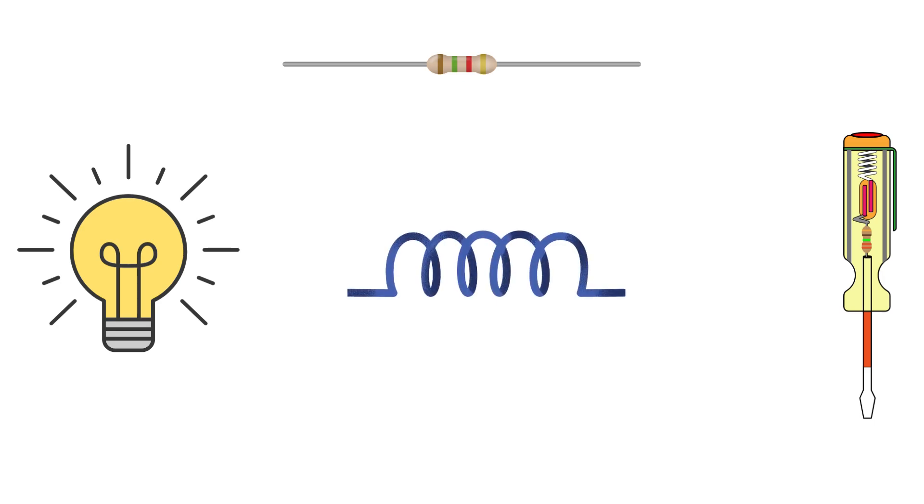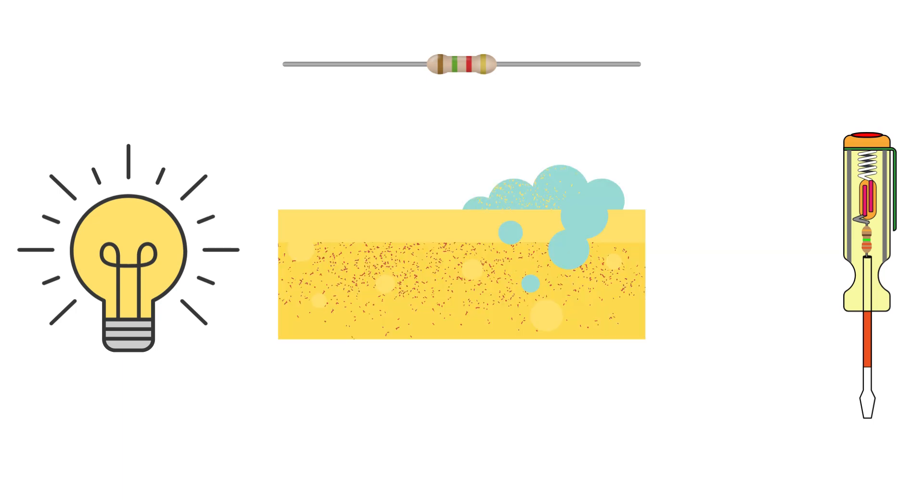First things first, what exactly is an inductor? An inductor is a passive electrical component that stores energy in a magnetic field when electric current flows through it. Think of it like a sponge soaking up water, but instead of water, it's storing energy.